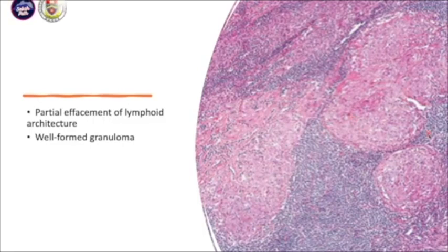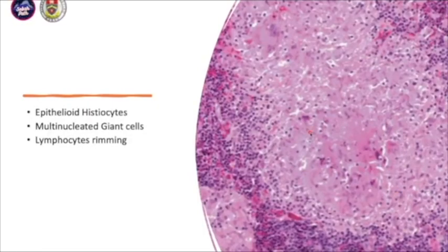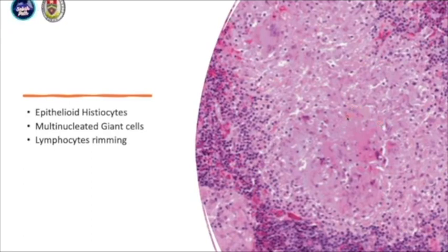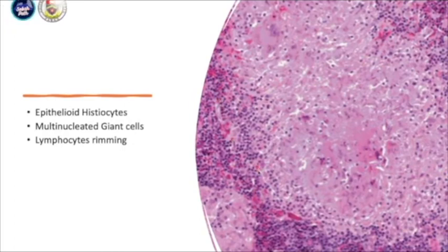What does this granuloma compose of? If you look at the higher magnification, it is composed of epithelioid histiocytes — histiocytes or macrophages within the tissue which have a pale nucleus and a shape like a slipper. And you have this multinucleated giant cell here. Within the granuloma, it is rimmed by mature lymphocytes. These are the characteristics of the granuloma.